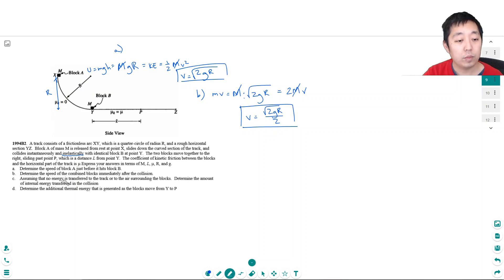Assuming that no energy is transferred to the track or the air surrounding the blocks, determine the amount of internal energy transferred in the collision. So we need to compare the energy before and after right. Before, the energy is all kinetic energy from block a moving, so it's one half, block a's mass is m, times its v squared which was square root of two gr squared. This is its kinetic energy before.